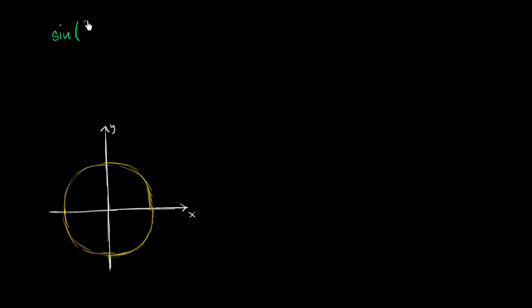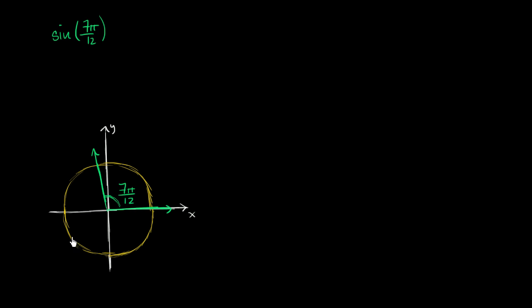What I want to do in this video is figure out what the sine of 7π/12 is without using a calculator. Let's visualize 7π/12 on the unit circle. One side of the angle goes along the positive x-axis, and if we go straight up, that's π/2, which is the same thing as 6π/12. So we have another π/12 to get to 7π/12 radians.